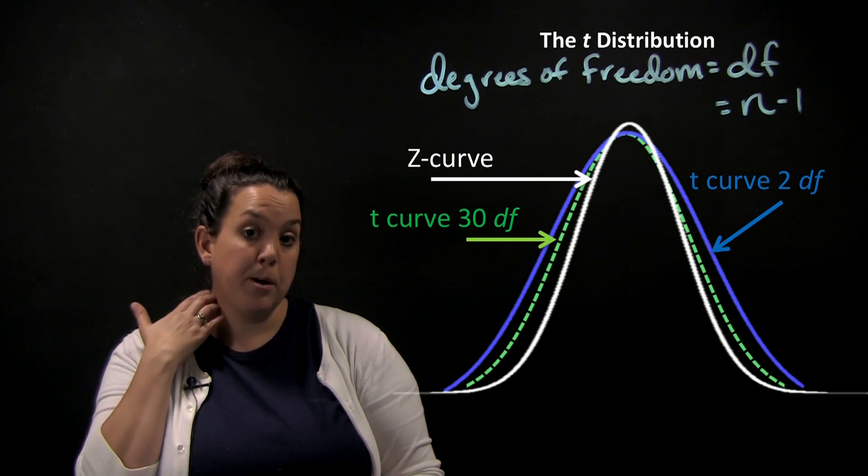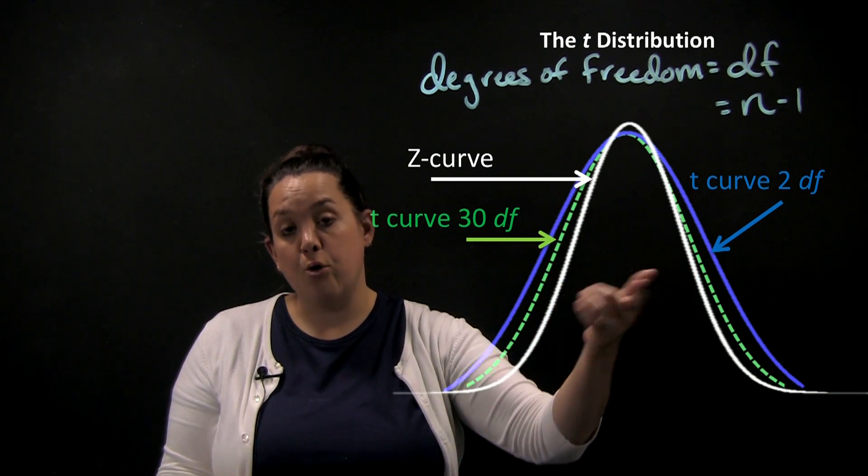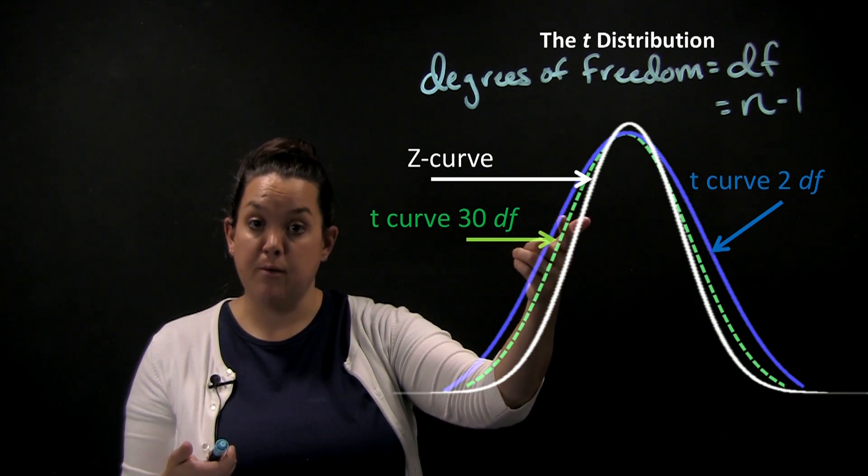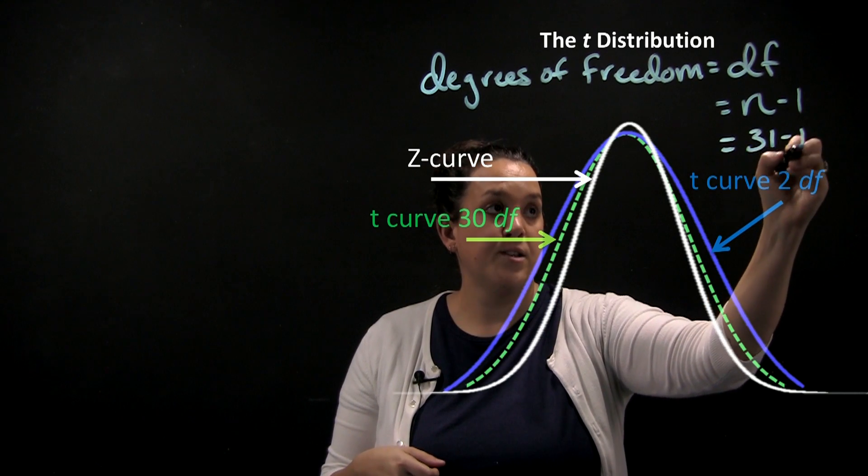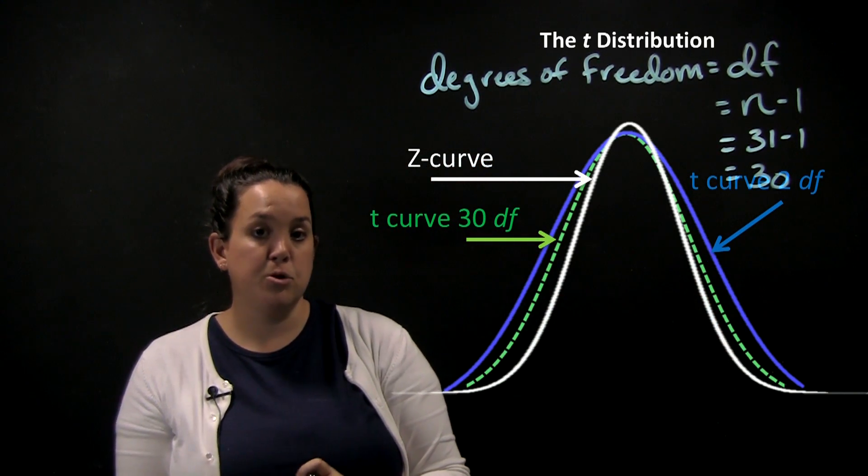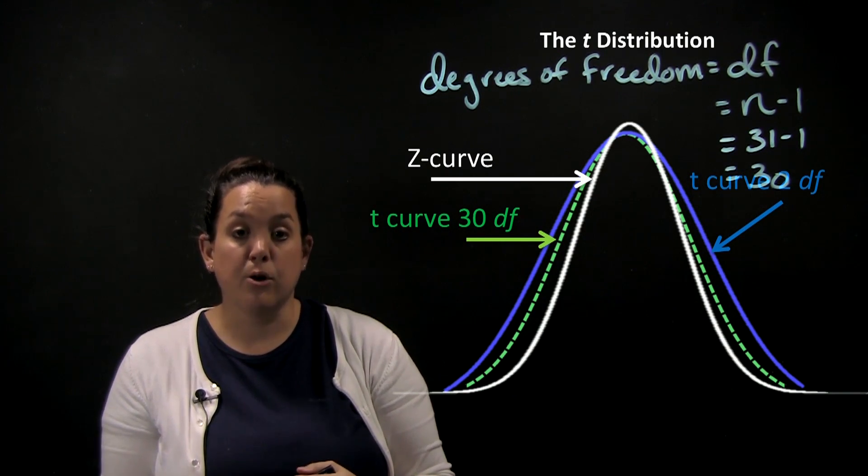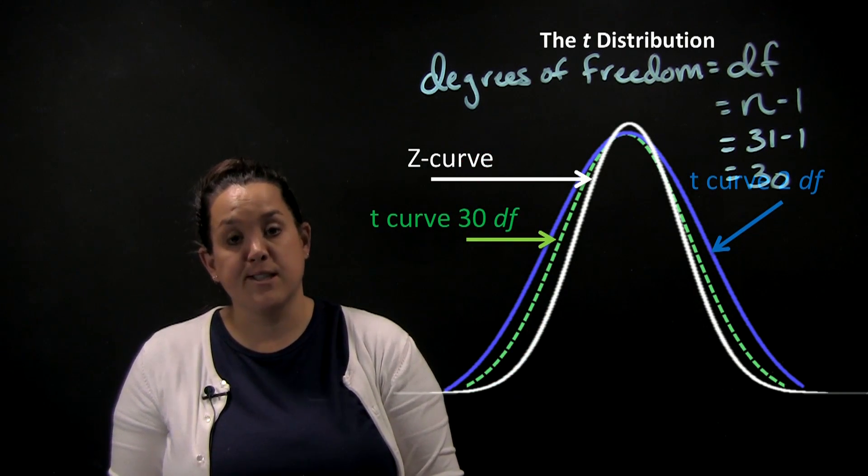When you look up a t-star multiplier, it will have a different multiplier based on what curve you're talking about. If you have a sample of size 31, you would have 30 degrees of freedom, because we're taking 31 and subtracting 1, so that's how we got to that green curve's distribution. You would look it up for that specific curve, because that's the t-curve you're referring to, and then you would connect it to a different confidence level.